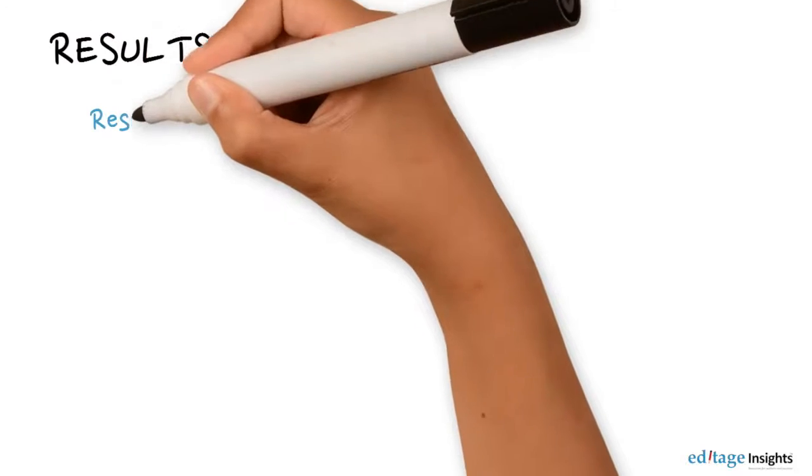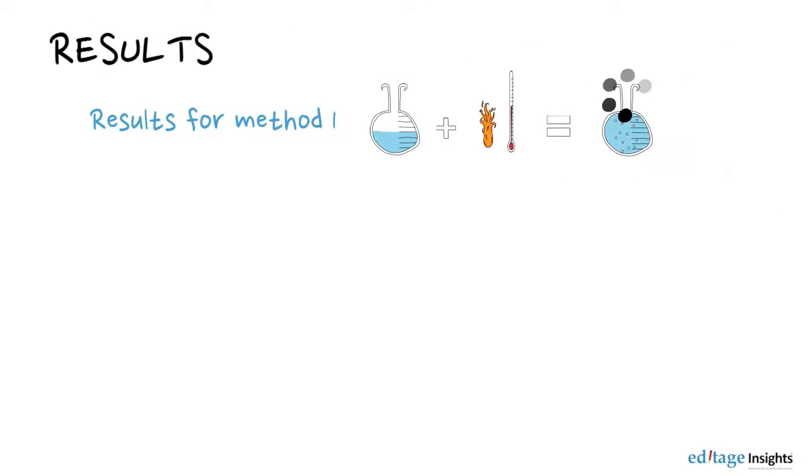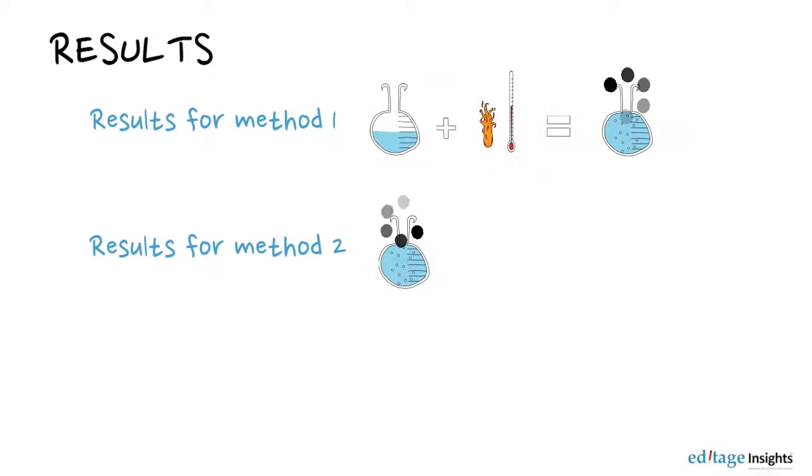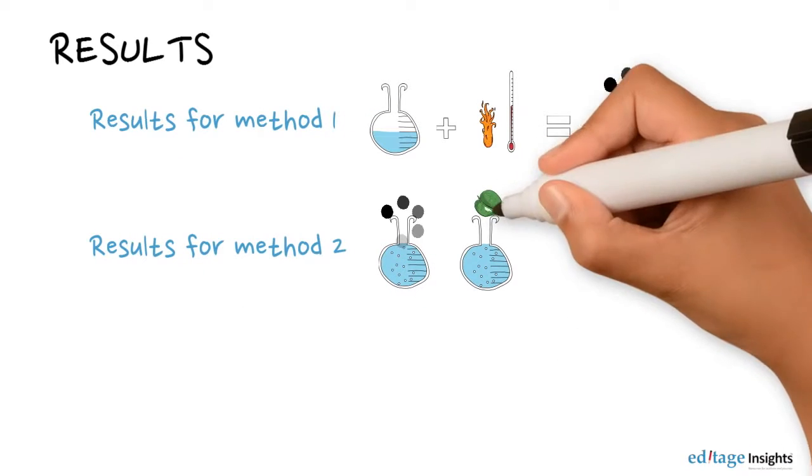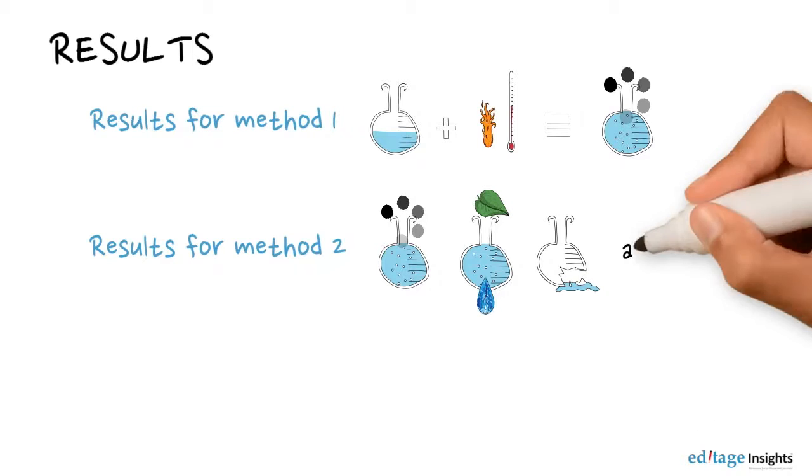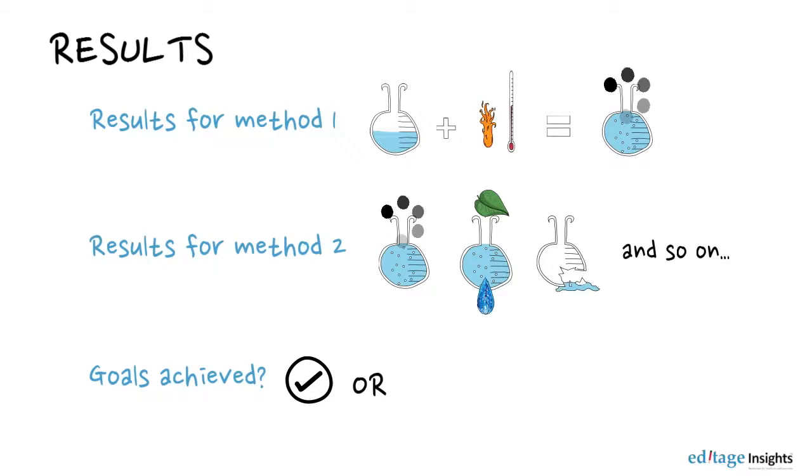In the results section, you must report the results for each method used and mention whether you were able to achieve the goals of your research.